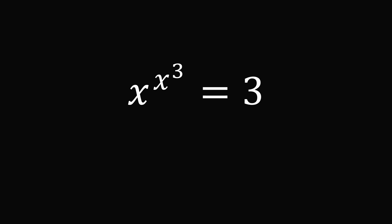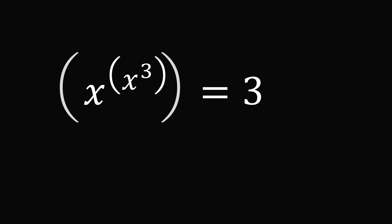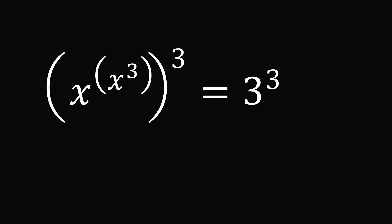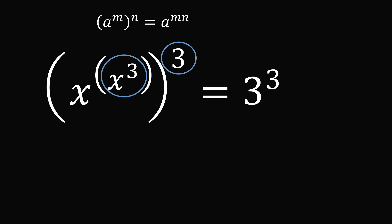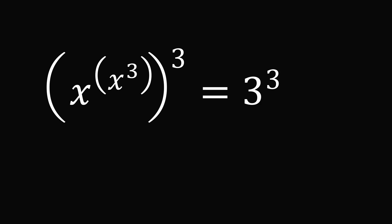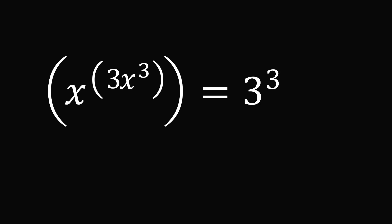I will first present an incredible trick to solve this equation using exponent rules. We have x to the power of x cubed is equal to 3. Here comes the first trick: let's raise both sides of the equation to the power of 3. We use the exponent rule: a to the power of m, the group term to the power of n, is equal to a to the power of m times n. Let's take m to be equal to x cubed and n to be equal to 3. So when we take an exponent to an exponent, we multiply them together, giving us 3 times x cubed.